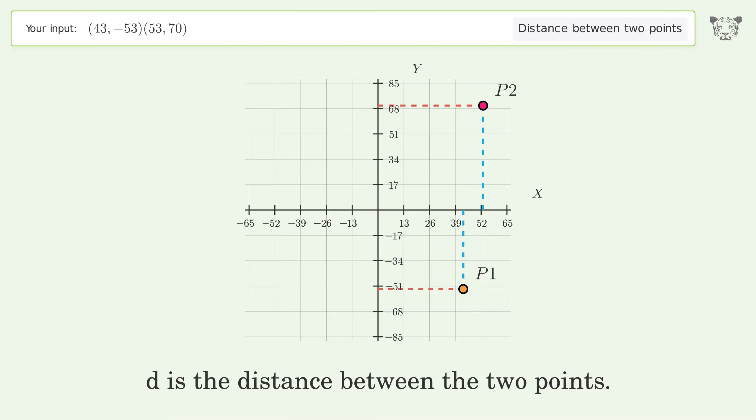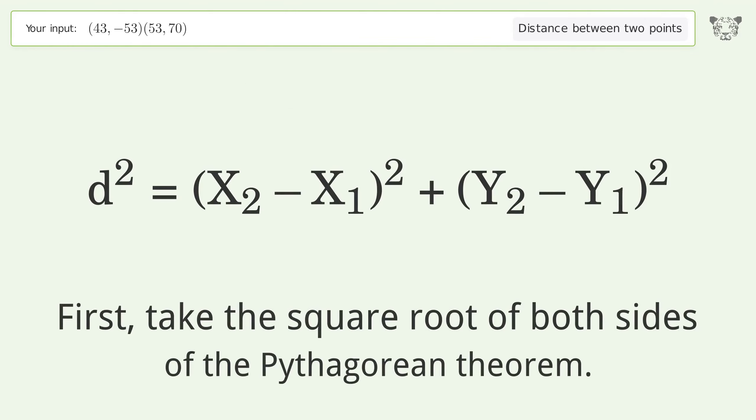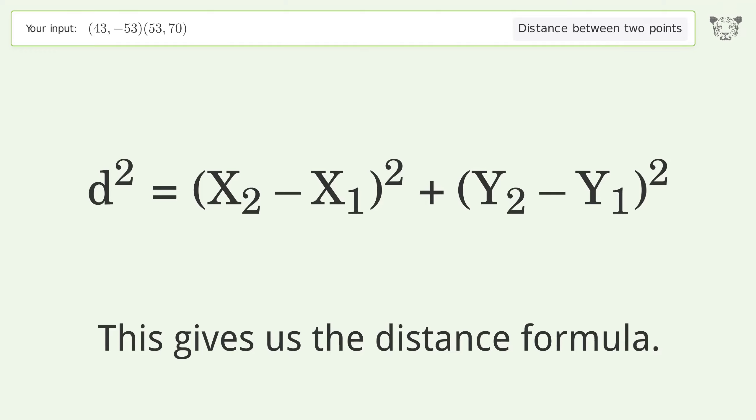d is the distance between the two points. First, take the square root of both sides of the Pythagorean theorem. This gives us the distance formula.